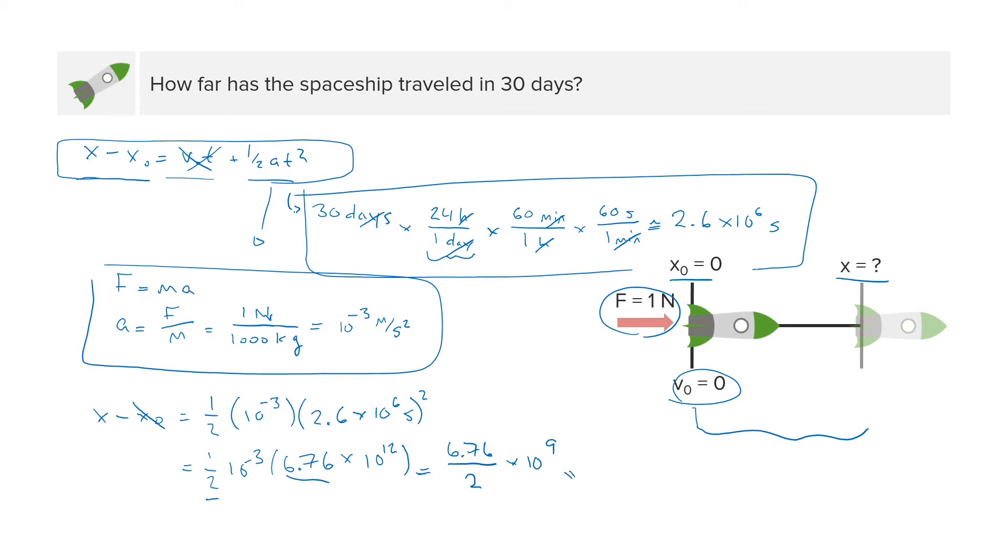Then all we have to do is simplify this slightly and get 6.76 divided by 2, which is about 3.38 times 10 to the ninth power, and this is in meters. So 3 times 10 to the ninth, or changing our units, it'll be 3.38 times 10 to the sixth kilometers if we wanted to write it in kilometers.